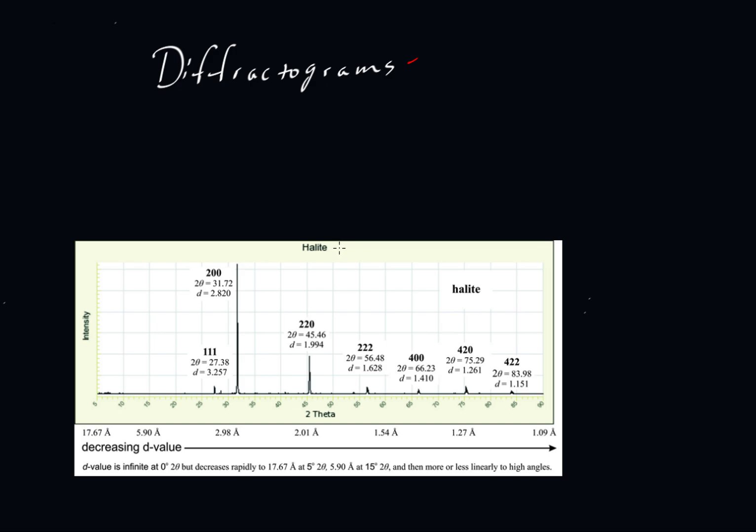Dexter Perkins shows a diffractogram for the mineral halite. Halite has been set up in an X-ray diffractometer and bombarded with X-rays. We generate these peaks based on the d-spacings between the atoms in the halite structure. We have a plot of intensity versus 2 theta. 2 theta has to do with the angle of reflection, and the intensity is how much X-ray energy is being reflected off these various planes.